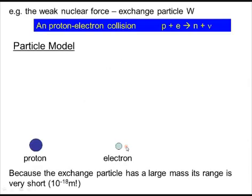What you need to know is some specific examples. We've got here a proton-electron collision. So we've got a proton and electron - they collide, they interact with each other, and they form a neutron and a neutrino.